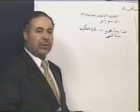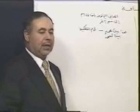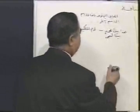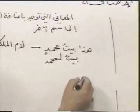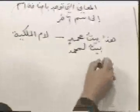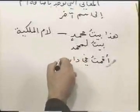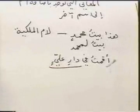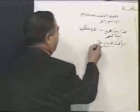ومثل ذلك كثير في كلام العرب، كقولنا: أقمت في دار علي. الإضافة هنا في قولك دار علي بمعنى لام الملكية، أي دار لعلي، فهي بمعنى لام الملكية.